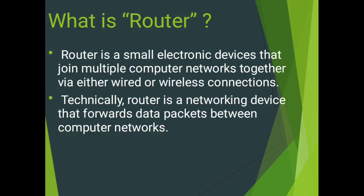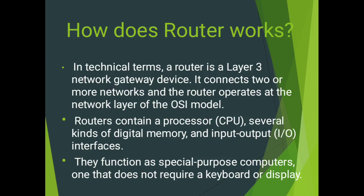If a PC named A wants to send data to B, the router will choose the best path within the network and send the data. Technically, a router is a networking device that forwards data packets between computer networks.